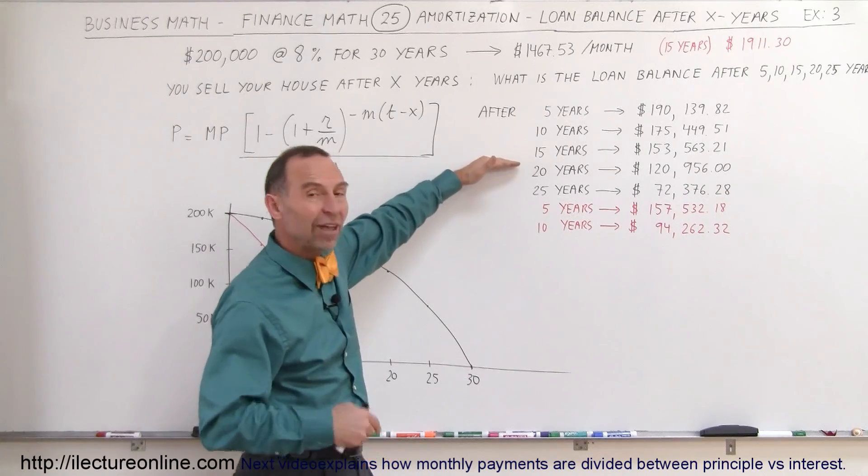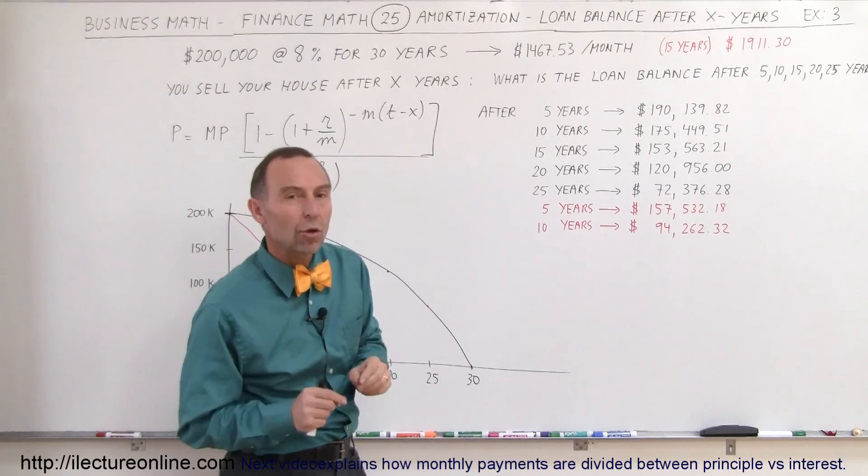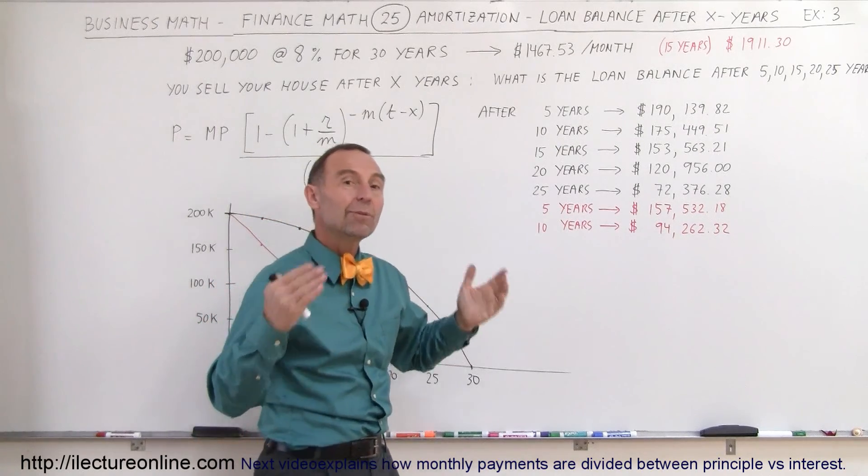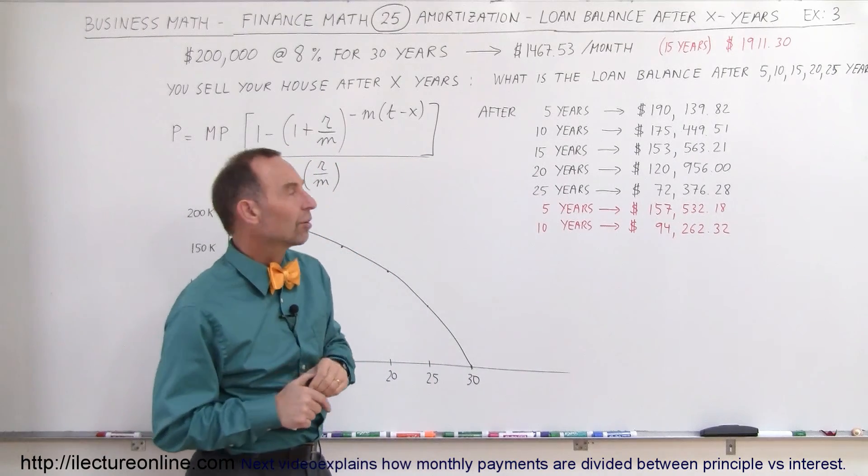Even after 15 years, halfway through the loan, you will still owe more than 75% of the original loan amount and all that money that you've been paying to the bank, except for the $47,000, will have gone to interest.